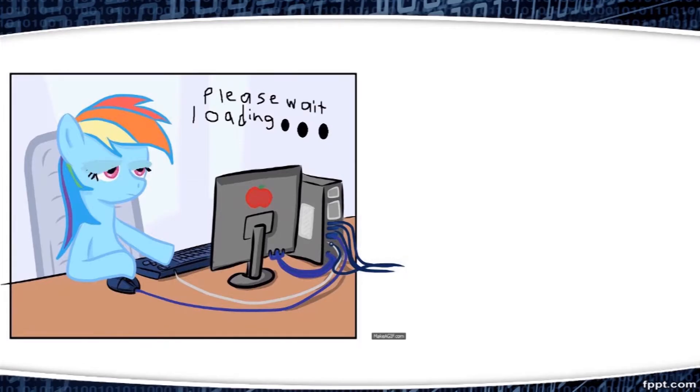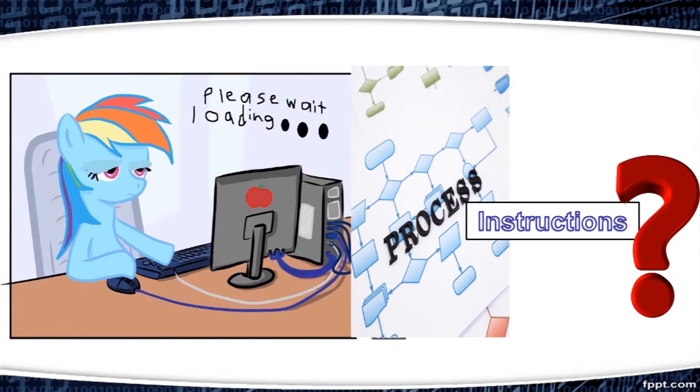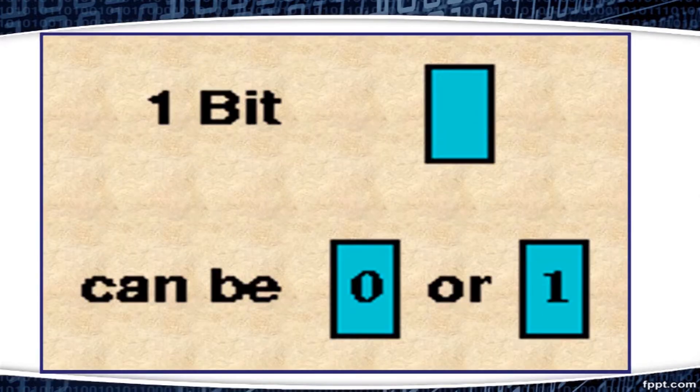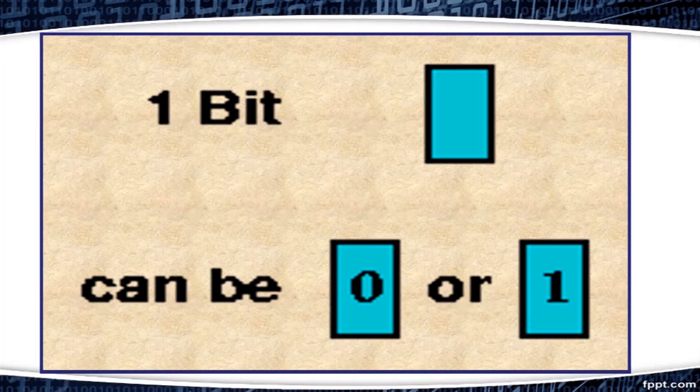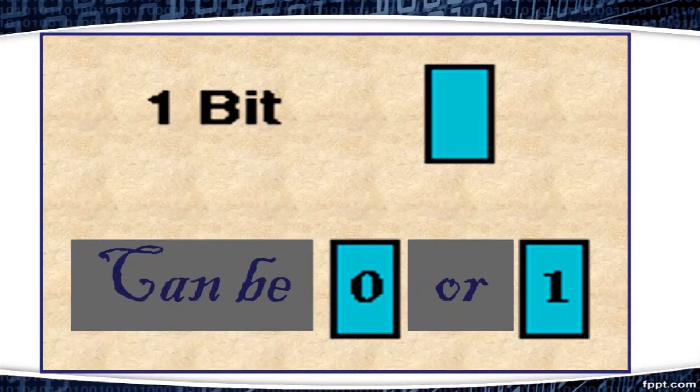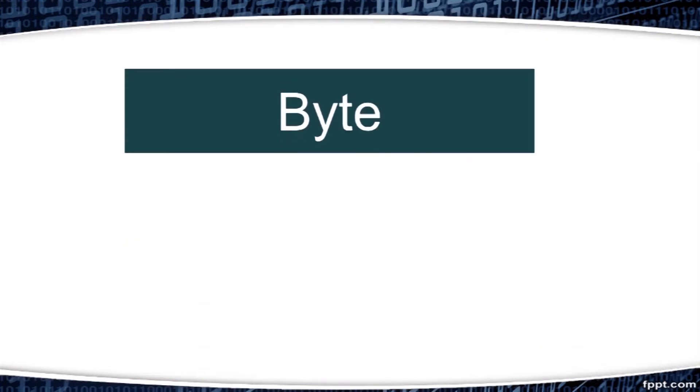So let's dwell deeper into the world of computer memories. First of all, what is a bit? As we studied, computer understands only 1 and 0. So both of these are known as bits. A bit can be 0 or 1. Now when we combine 8 bits together, it becomes a byte.